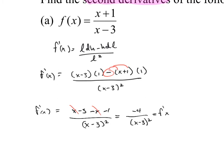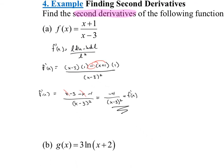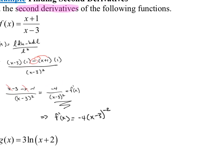So this is my first derivative, but that's not what the problem wanted — the problem wanted the second derivative. Now, I could do the quotient rule again, but if you remember, we did an example like this where we realized it's a constant on top, and if it's a constant on top, a better way of writing this would be negative 4 times x minus 3 to the negative 2, and then I could just use the general power rule, which saves me from having to do the quotient rule again. So that's how I'm going to think about my derivative function.